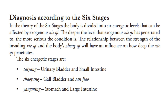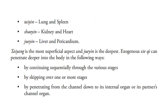The six energetic stages are Taiyang, which involves the urinary bladder and the small intestine; Xiaoyang, which pertains to the gallbladder and the sanjiao; and Yangming, the stomach and large intestine. Next, we have the Taiyin, which pertains to the lung and spleen; the Xiaoyin, which pertains to the kidney and the heart; and the Jueyin, which pertains to the liver and pericardium. Taiyang is the most superficial aspect and Jueyin is the deepest.